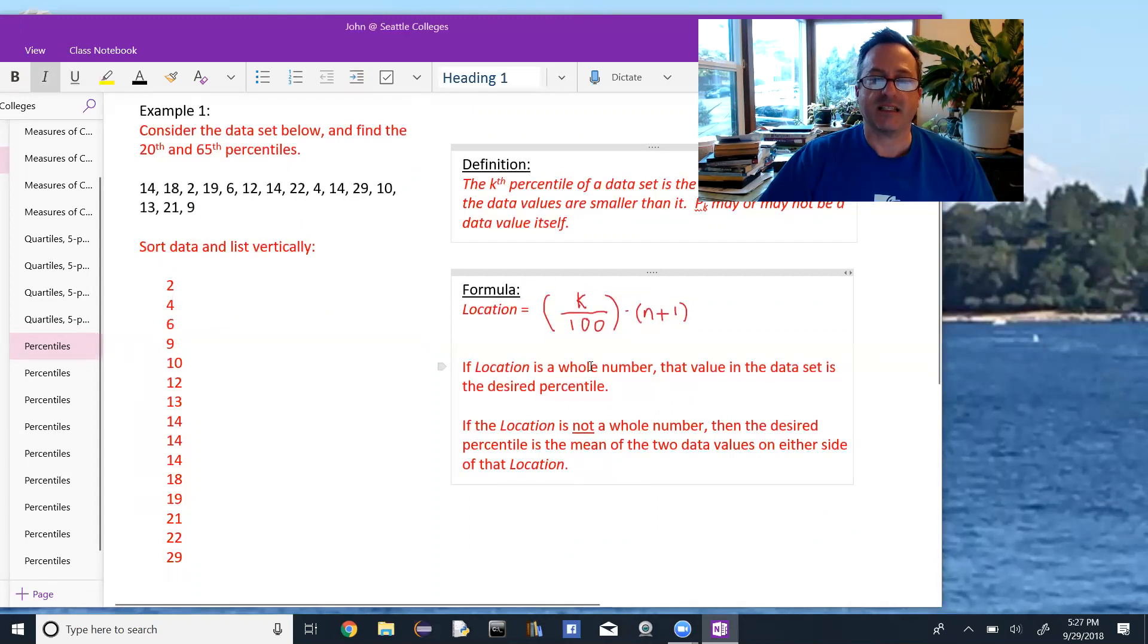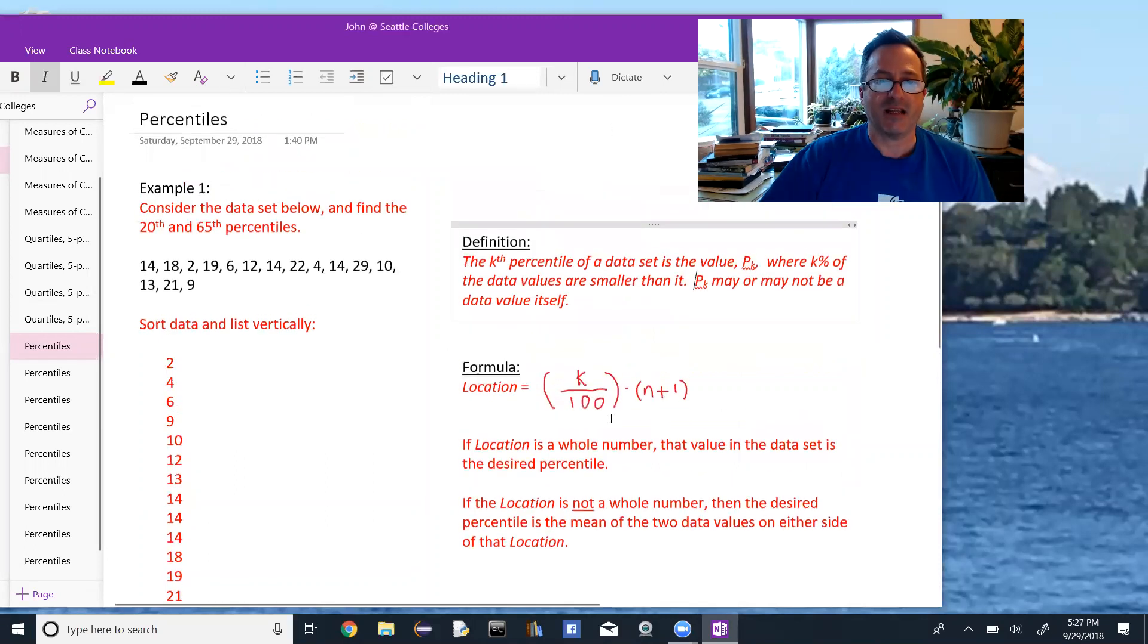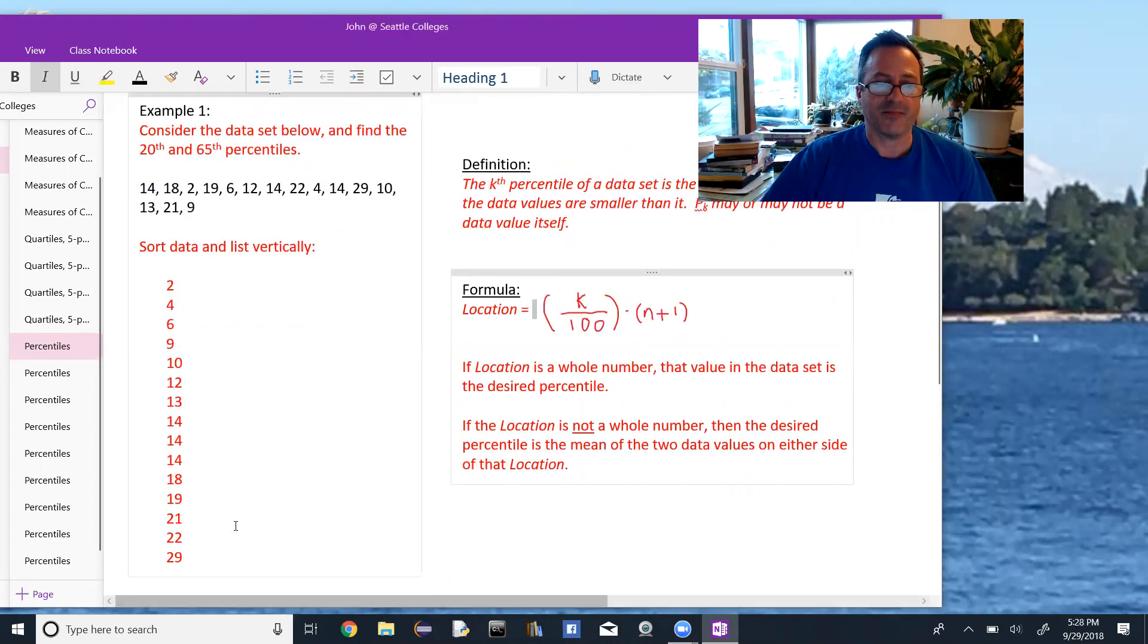So we have a formula to find it. The formula is the location of the data values given by k over 100 times n plus one, where k is the value of the percentile we're looking for and n is the number of data values in our set. So if that location is a whole number, then the value in that location is the desired percentile, and if that location is not a whole number, then the percentile is the mean of the two data values on either side.